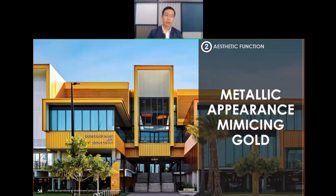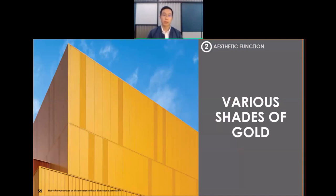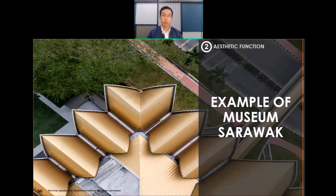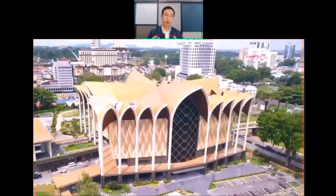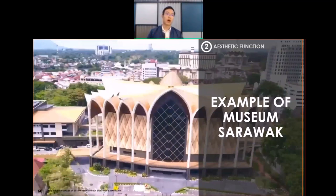Metallic appearances can also mimic gold color - this example was built in Australia, showing different shades of gold. Locally, we have our own example: the Sarawak Museum, which has been covered extensively in news. From a drone shot, you can see the metallic finishes change in appearance as the viewing direction changes, illustrating how metallic finishes affect building envelope appearance.